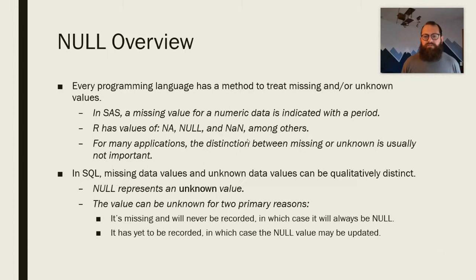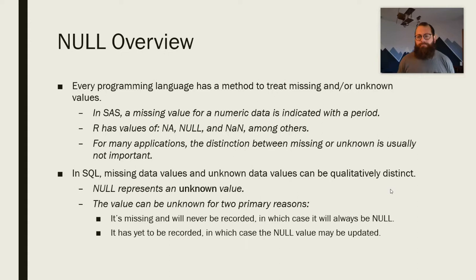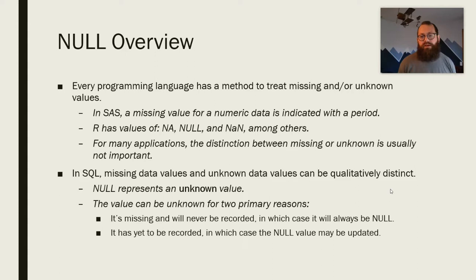The null value really arises because of a more general occurrence with data — missing and unknown values, which is quite common. Each programming language deals with missing or unknown values differently, and they mark them differently. In SAS, a missing value for numeric data is a period, and for character data it's an empty string. R has values of NA, null, and NaN — NaN being 'not a number.'